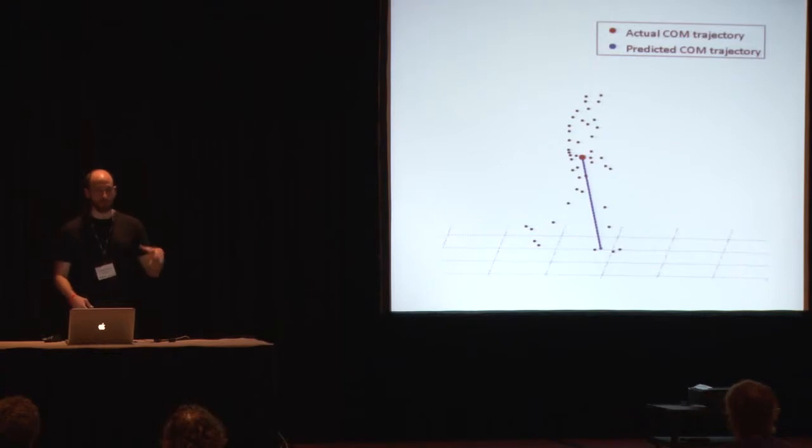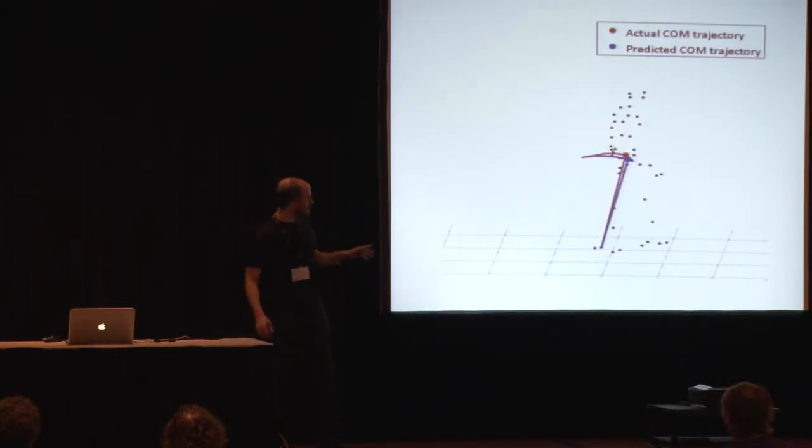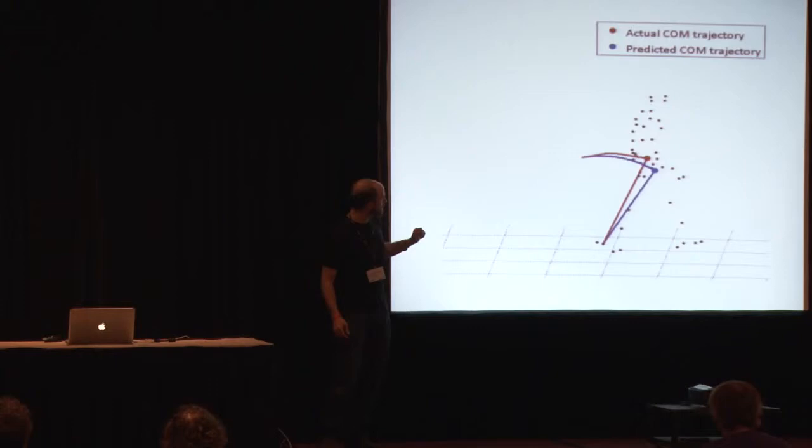To see how well people are exploiting that pendulum structure, I built up a model of an idealized three-dimensional passive inverted pendulum in MATLAB, and then fed in the initial position and velocity of the subject's center of mass at the beginning of each step, and then let it go. The red line here is the actual trajectory of the subject's center of mass during a step. The blue line is the trajectory of the passively falling three-dimensional inverted pendulum.